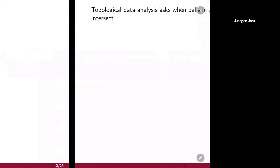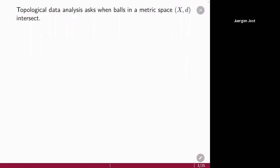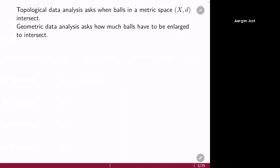To get started, topological data analysis asks when balls in a metric space intersect. The geometric data analysis that I want to talk about asks how much you have to enlarge balls in order to get them to intersect. The first one is, in essence, a qualitative question — although in TDA, you make it quantitative by looking at the dependence on the radius involved. The geometric question by its very nature already is a quantitative one.